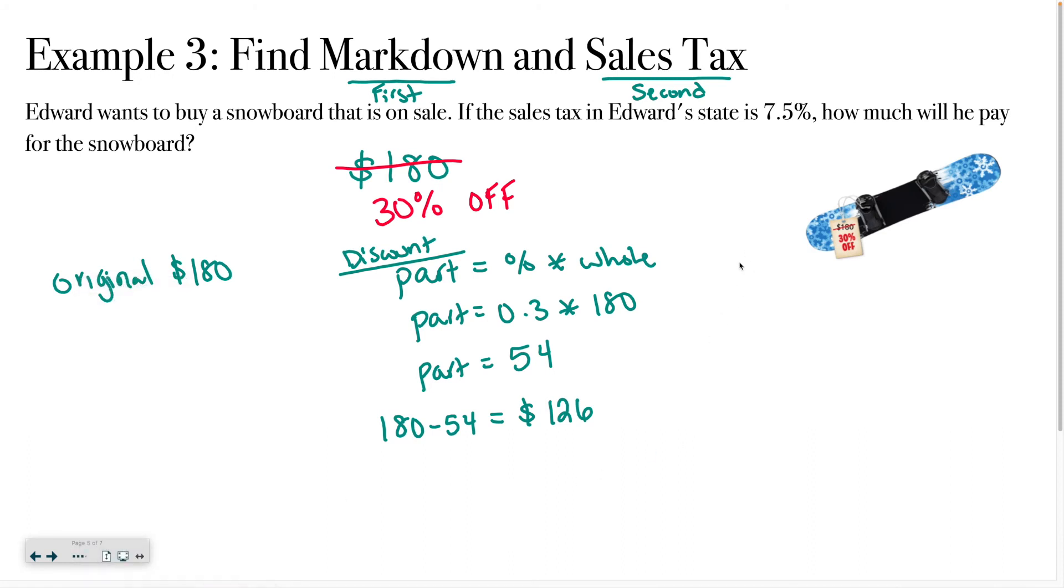Another way of looking at discounts is you can do the price equals, and then you remember how I did for markup, I did 100% plus whatever the percent was. For markdown or discount, we say minus, and then you do times the whole. So I would do 100%, which we represent with a one, minus the 30%, which we represent with a 0.3. And if I were to do that, one minus 0.3 is 0.7. That means that I'm paying 70% of the original cost. And that right there will give you the price is $126.